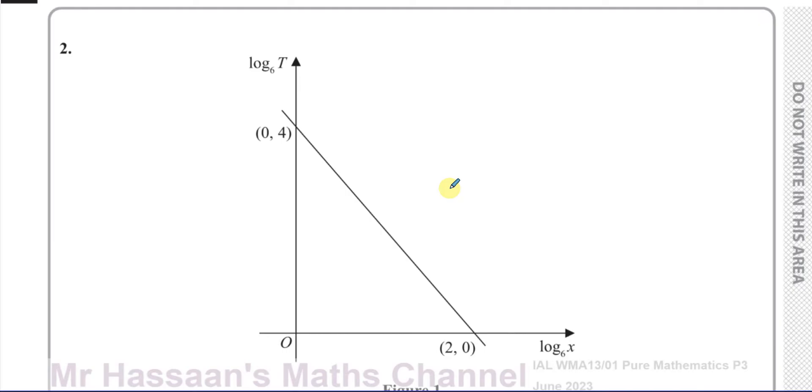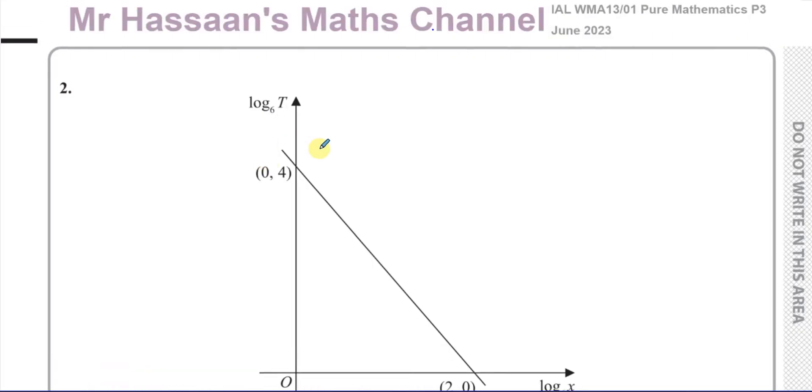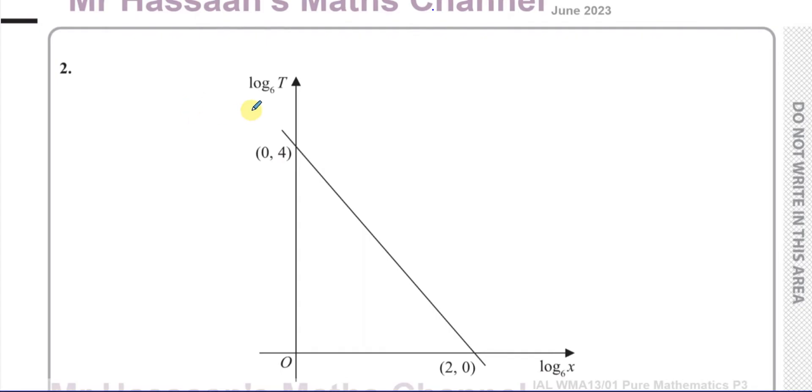This question here is about logarithms and this particular aspect of logarithms where you deal with these type of log graphs, straight line graphs dealing with logarithms is something which you won't find in the older C3 or C34 papers. It's something that was introduced with the new P3 syllabus, so you won't find these in the older legacy papers. This is something which is relatively new in the syllabus.